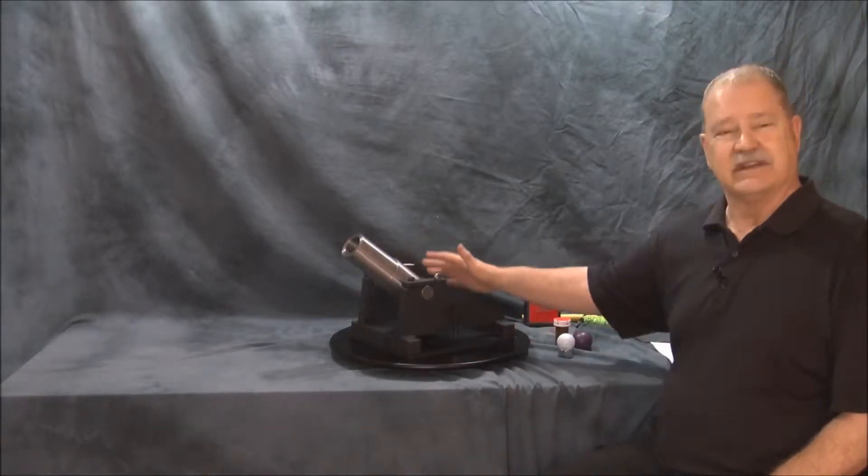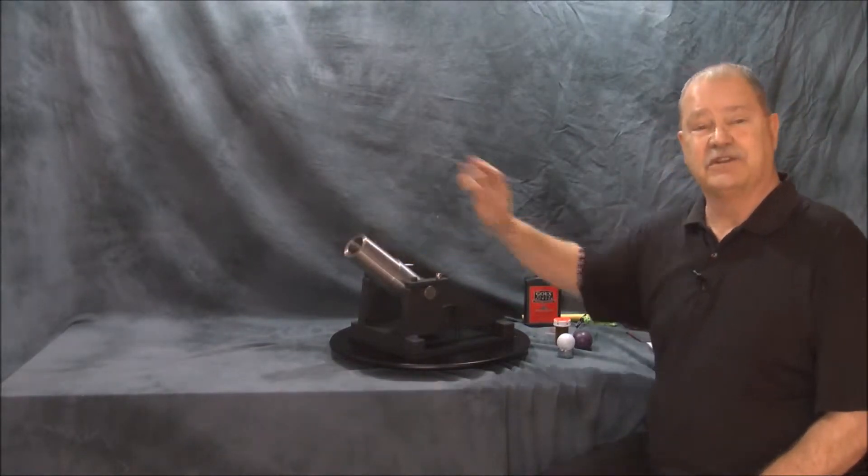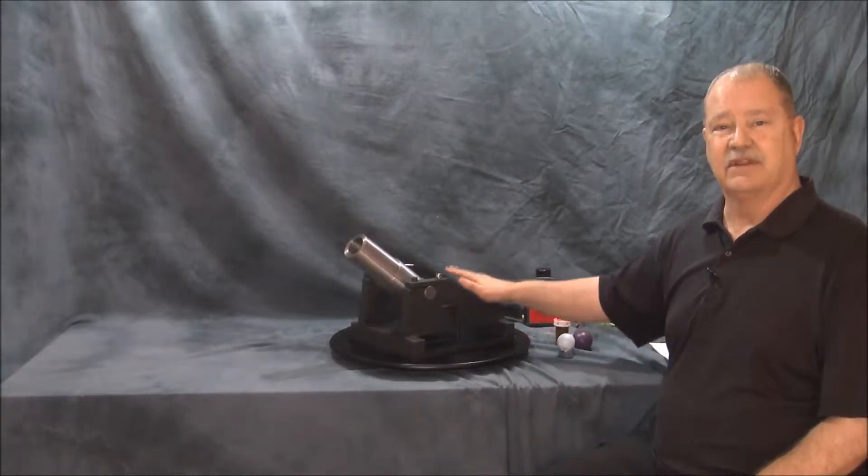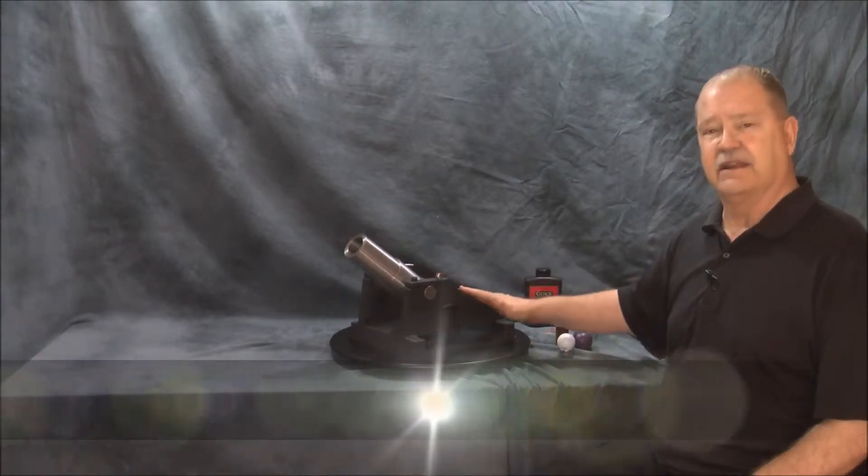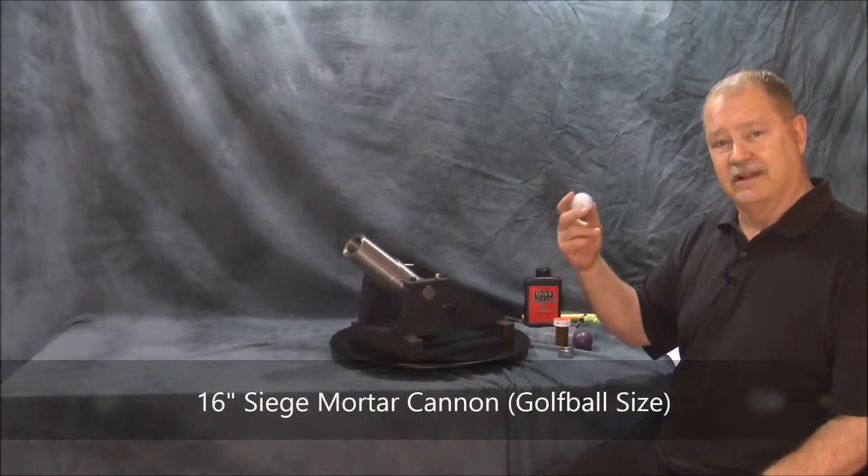This is an example of one of ours. These are smoothbore, as opposed to rifling that you might see in a regular gun. This is kind of an old-fashioned cannon. This particular one we're looking at here shoots the golf ball. It's designed to shoot primarily golf balls.